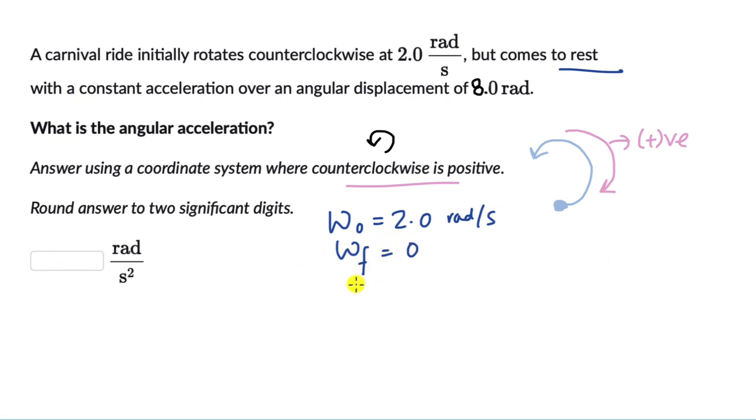We know the angular displacement delta theta, this really is 8 radians. We need to figure out angular acceleration. Now we do not know time also. We do not know angular acceleration but we do know these three variables.